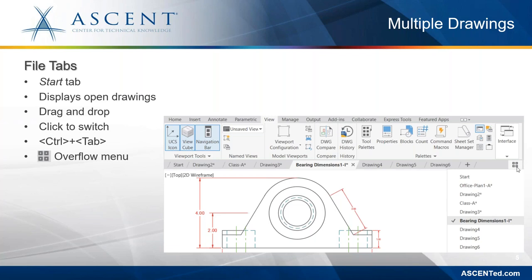You can also use Ctrl and Tab keys to cycle between drawings, just like in other Windows applications. When there are too many open drawing files, an overflow menu displays. Clicking on the overflow menu shows a complete list of open files, and you can select the required file name to switch to that drawing.